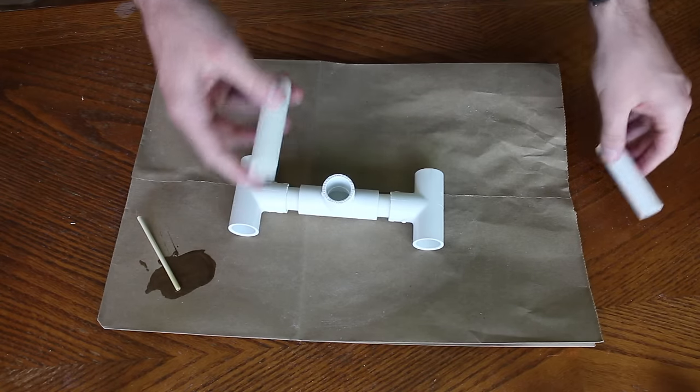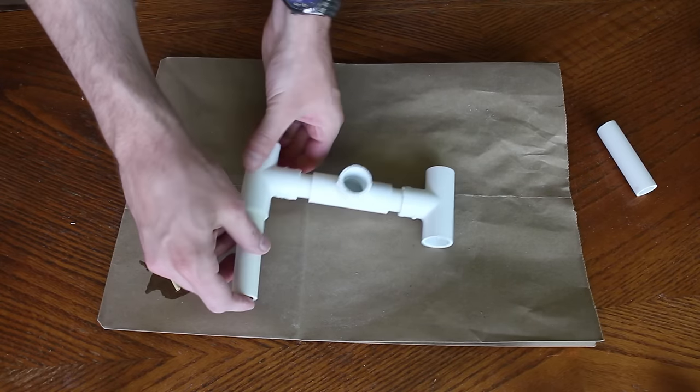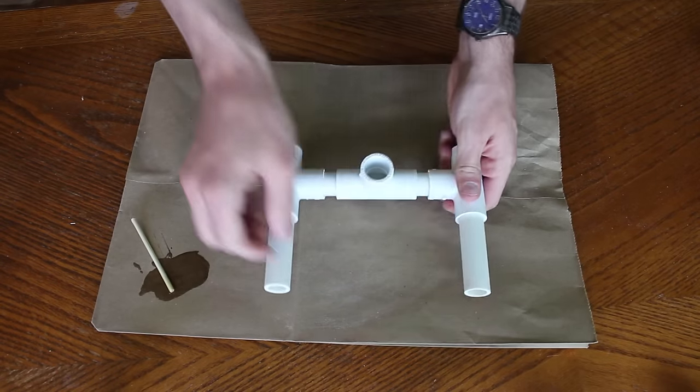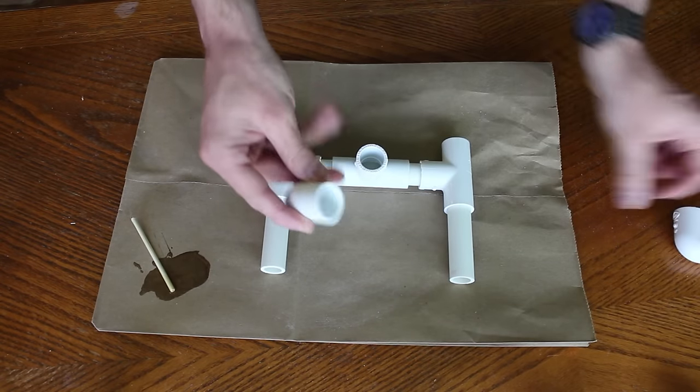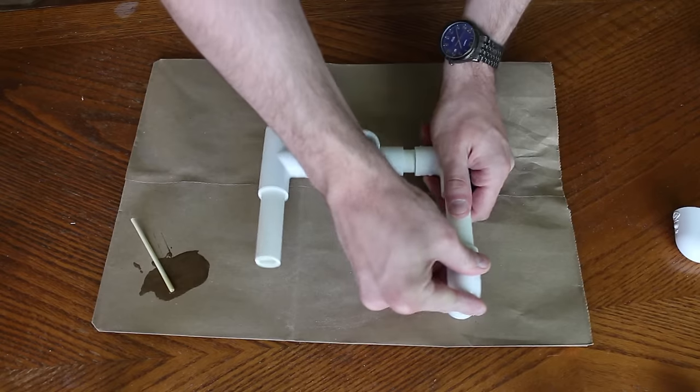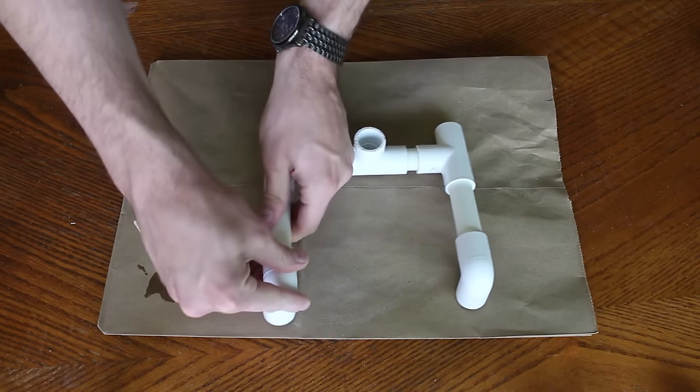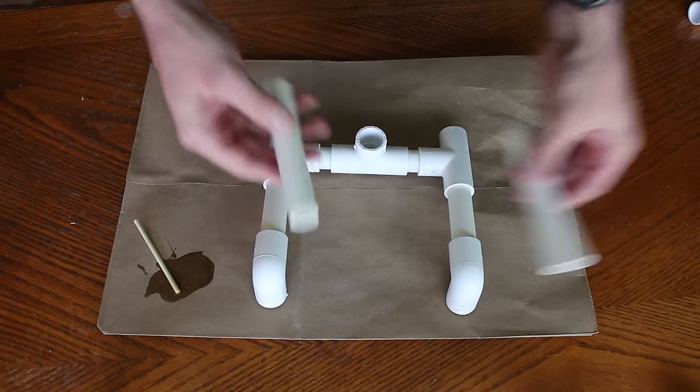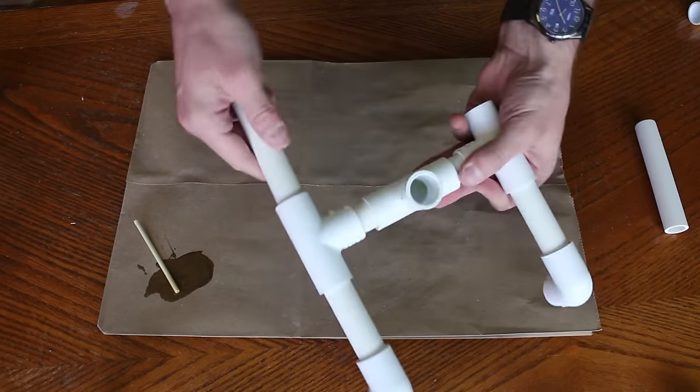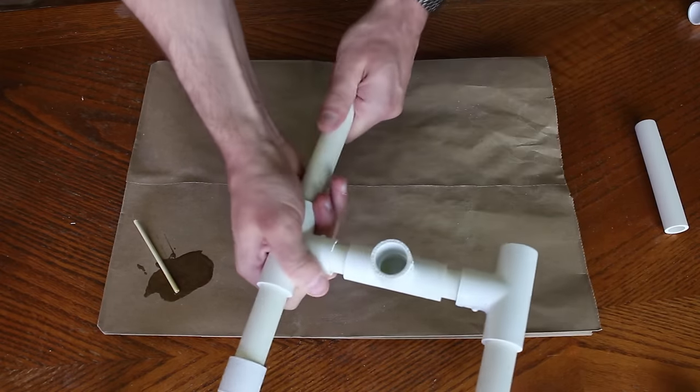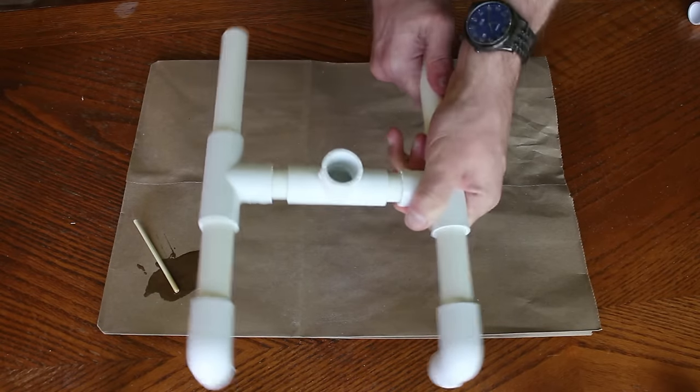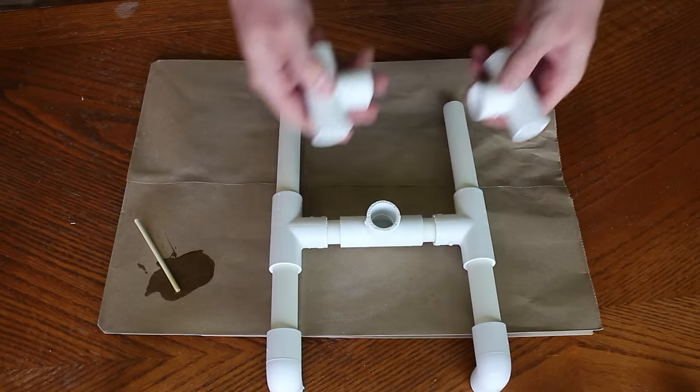Now we'll take the 2 5 inch lengths and place them in what's going to become the back. We won't need any epoxy for the rest of this project. Now take the 2 PVC elbows and press them in place like this. Then we'll take the 5 inch lengths and press them into the front, followed by 2 more tees.